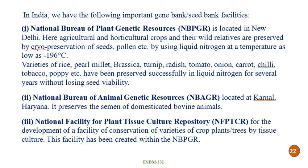The first organization is the National Bureau of Plant Genetic Resources (NBPGR), located at New Delhi. Here, agricultural and horticultural crops and their wild relatives are preserved by different methods. The most important ones are preserved by cryopreservation — the method of long-term preservation in which seeds, pollens or any plant material is stored in liquid nitrogen at minus 196 degrees Celsius. Different varieties of rice, wheat, Brassica, teri and other crops have been preserved successfully in liquid nitrogen for several years without losing seed viability. Cryopreservation stores and conserves plant genetic material without losing viability.